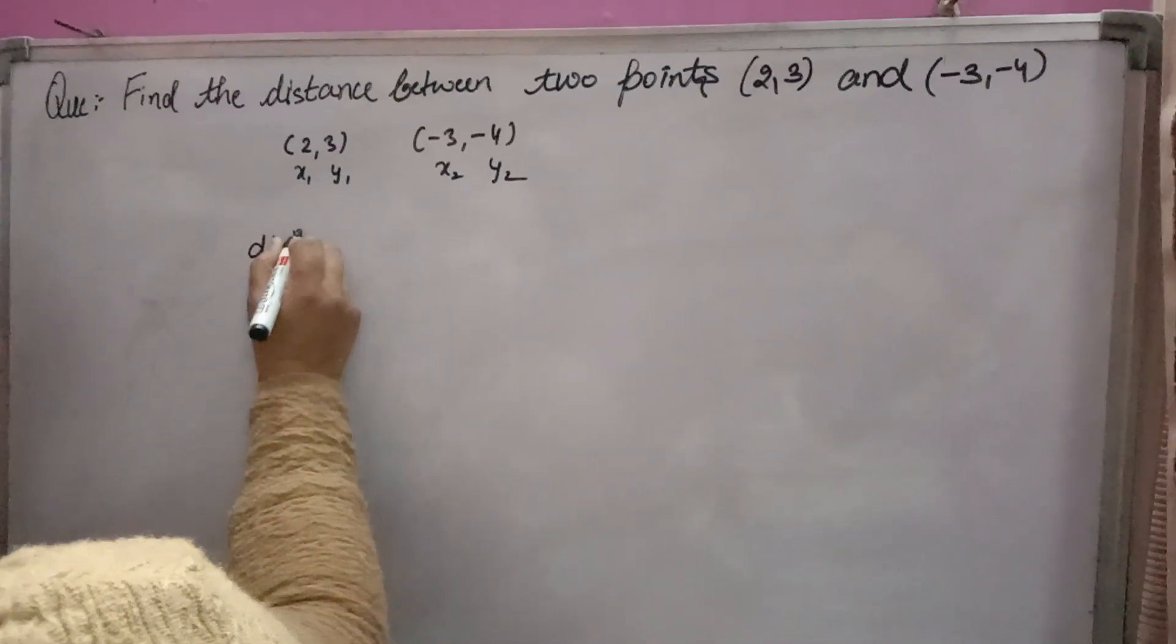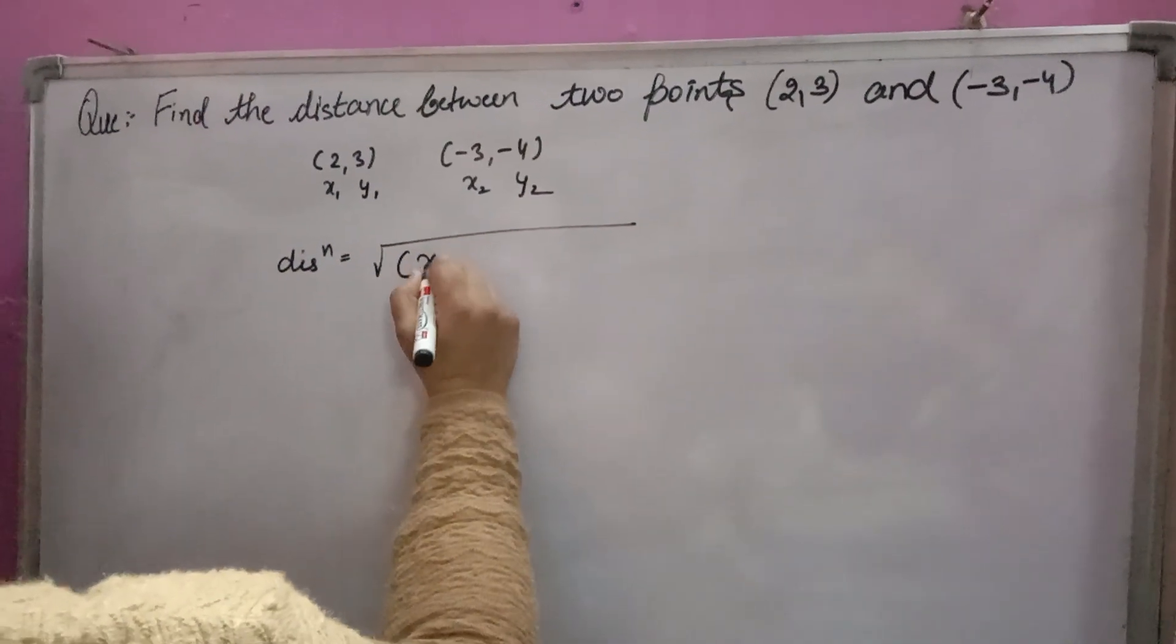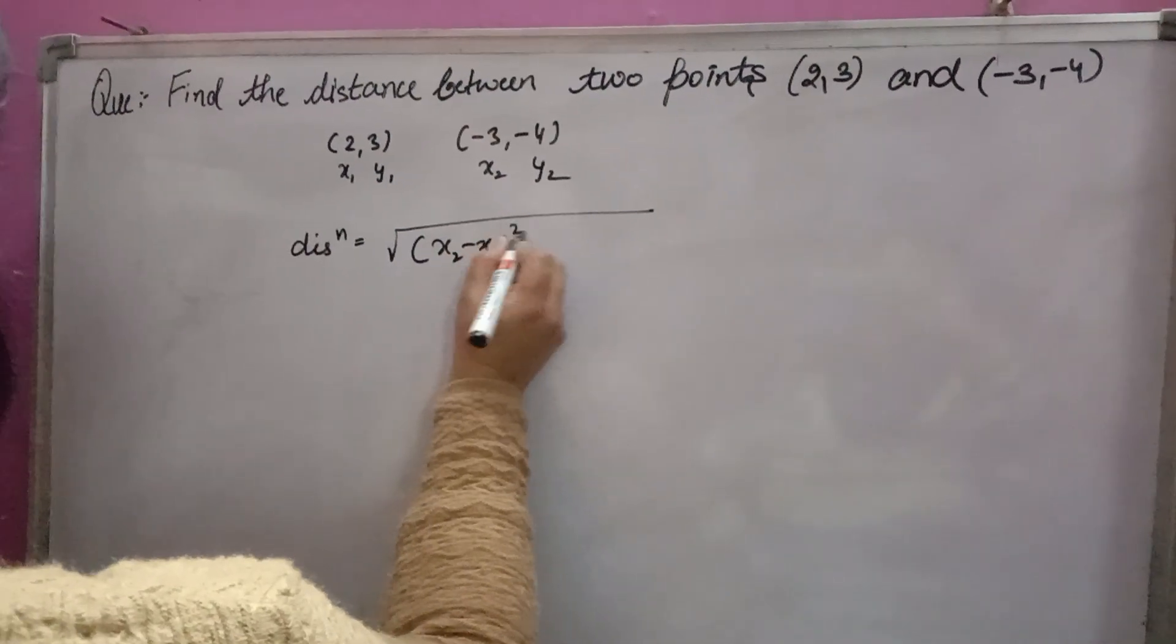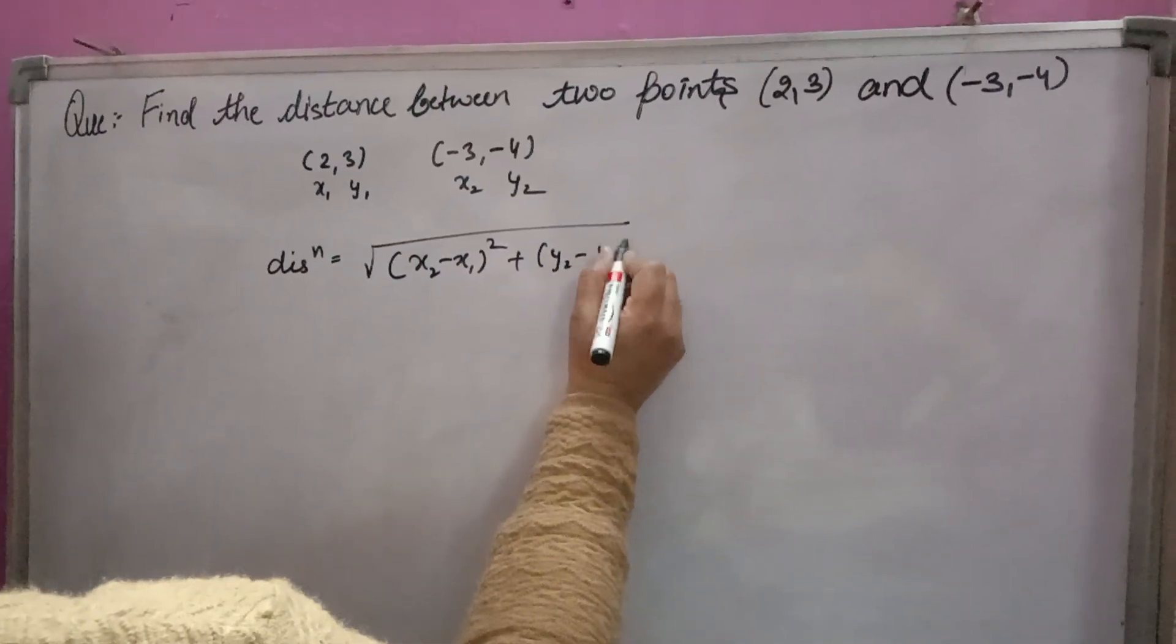Distance formula: distance between two points is under root of x2 minus x1 whole square plus y2 minus y1 whole square.